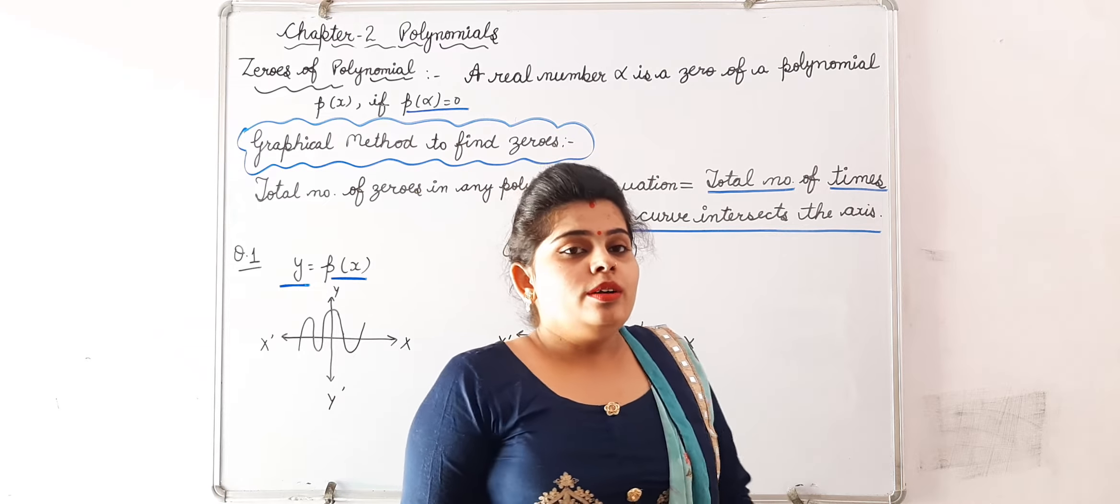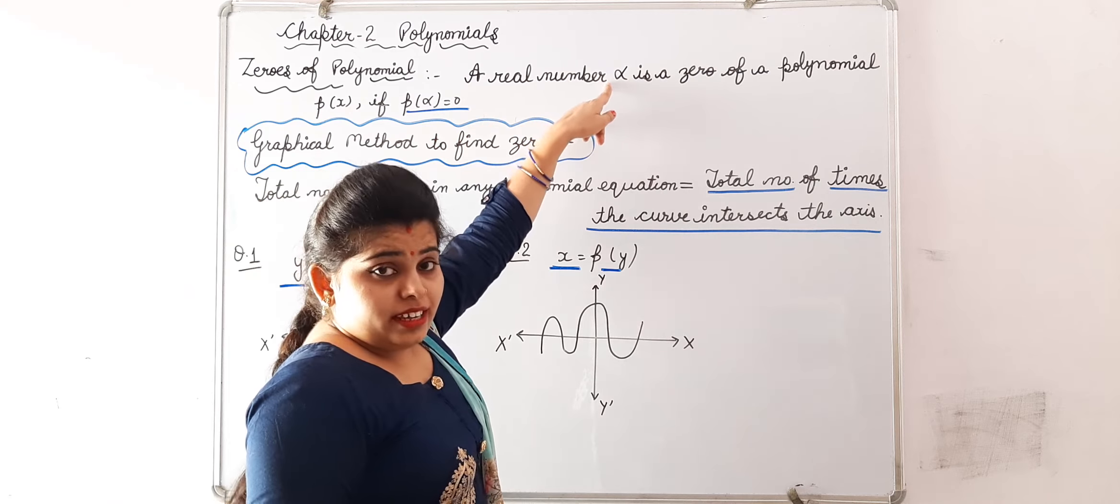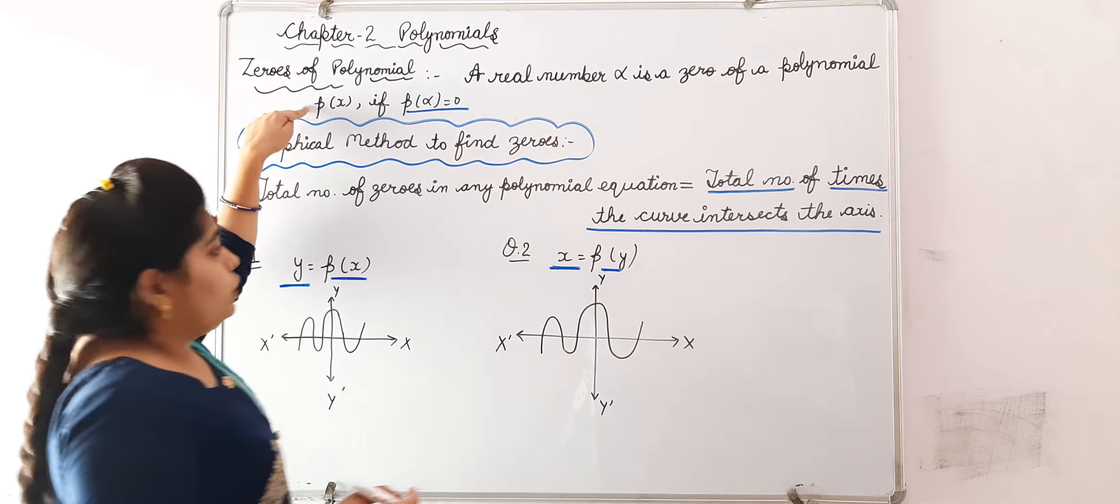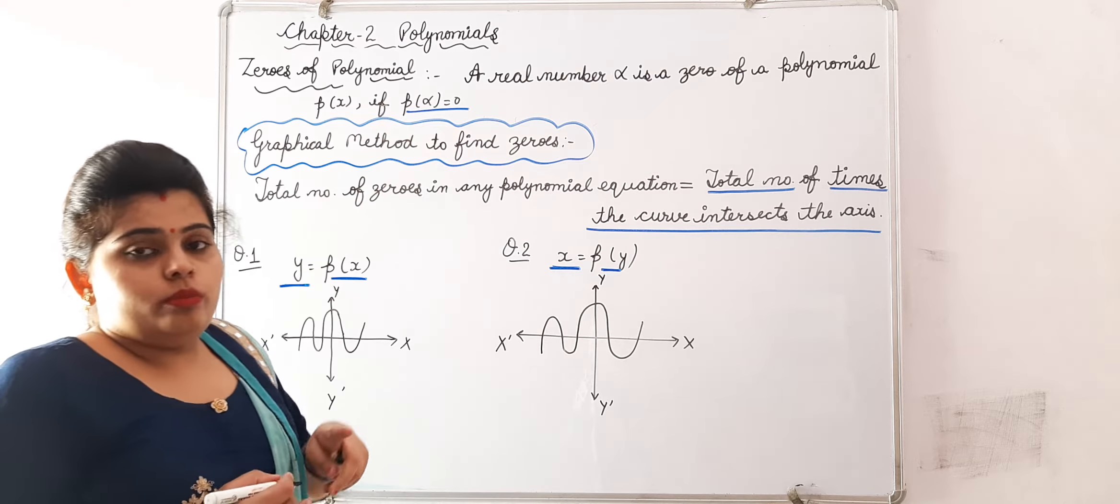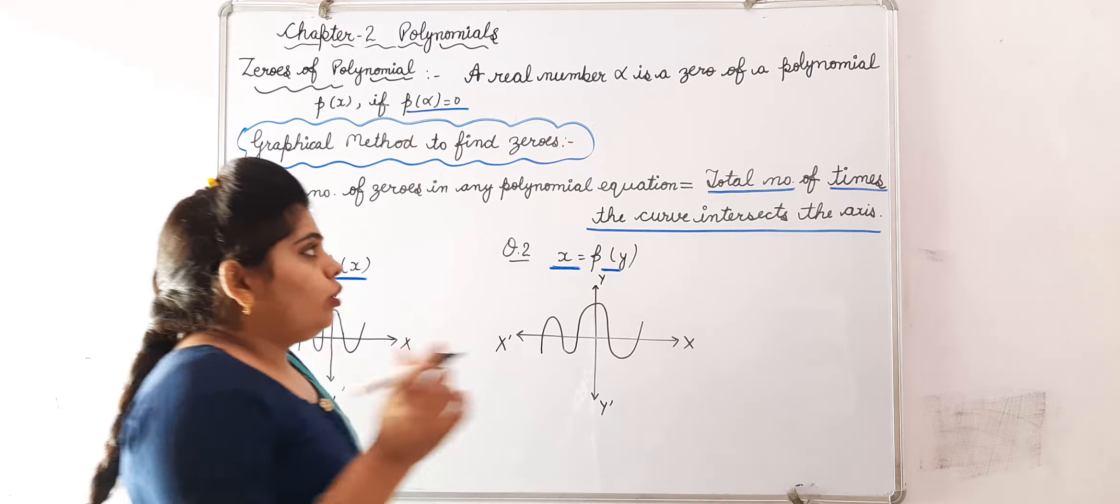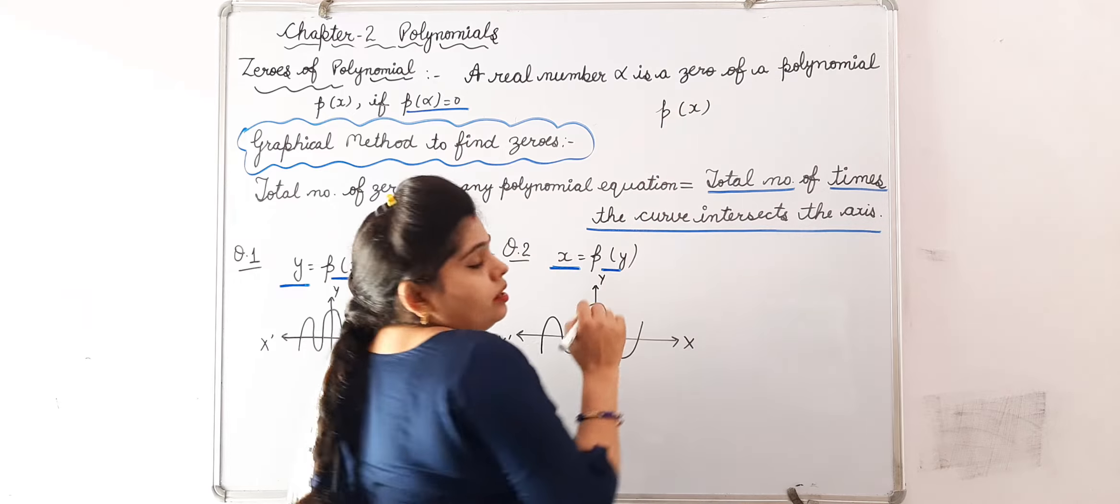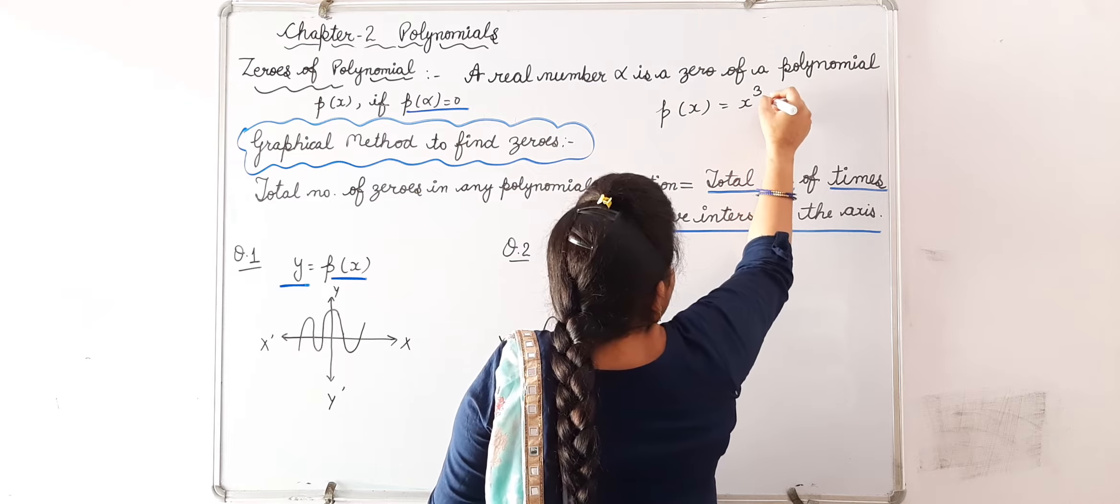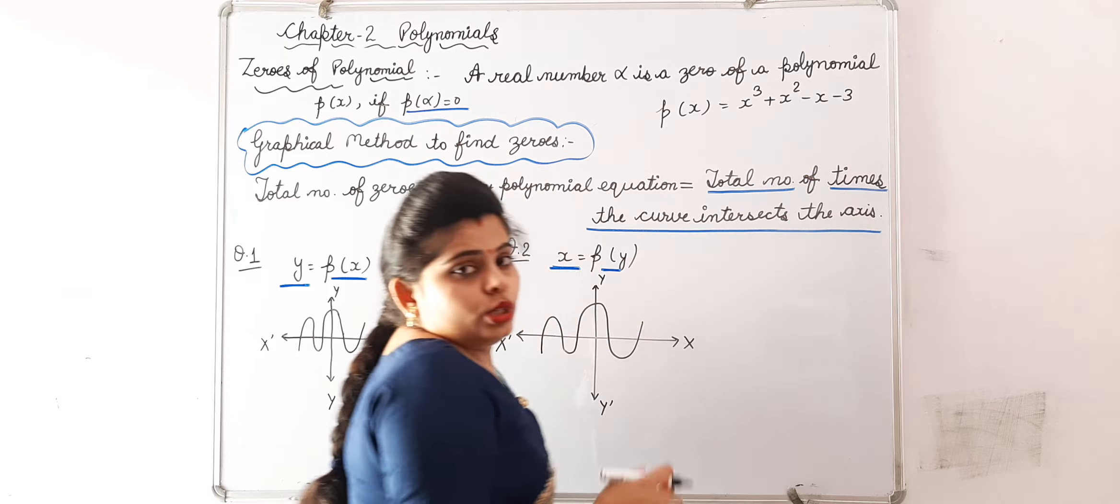Now, zeros of a polynomial. Suppose a real number alpha is there. We will say alpha is a zero of given polynomial P of x if we will get P of alpha is equal to 0. Our basic polynomial given in P of x, suppose it is equal to x³ plus x² minus x minus 3. Suppose alpha is a real number.